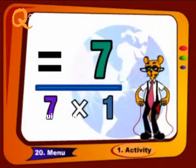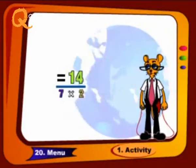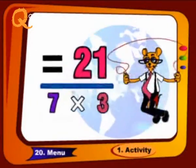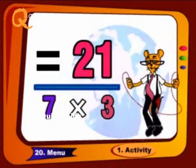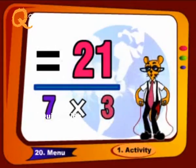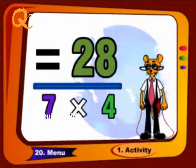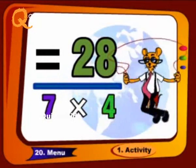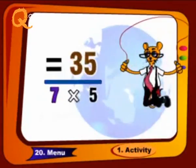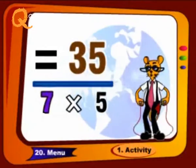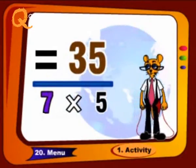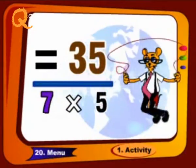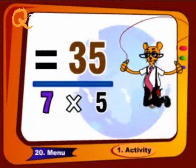7 1's are 7, 7 2's are 14, 7 3's are 21, 7 4's are 28, 7 5's are 35.